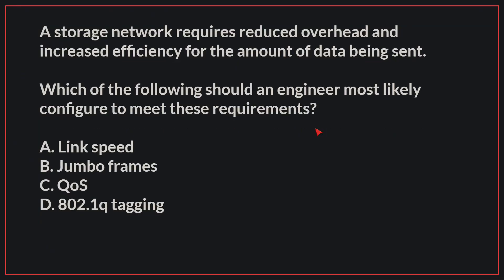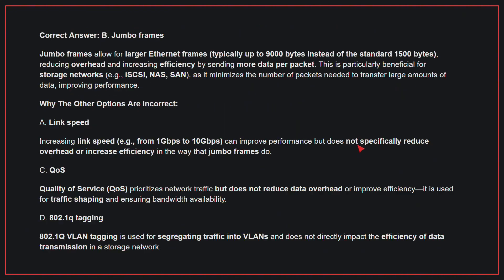A storage network requires reduced overhead and increased efficiency for the amount of data being sent. Which of the following should an engineer most likely configure to meet these requirements? The correct answer is B: Jumbo frames. Jumbo frames allow for larger Ethernet frames, reducing overhead and increasing efficiency by sending more data per packet. This is particularly beneficial for storage networks as it minimizes the number of packets needed to transfer large amounts of data, improving performance.